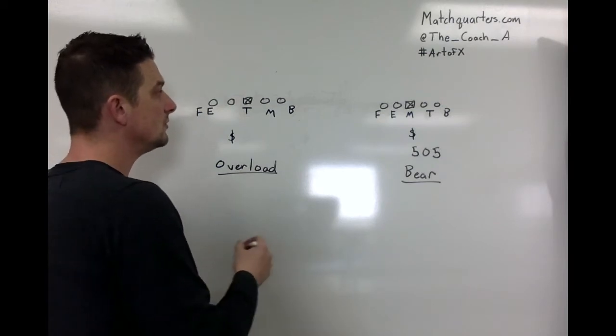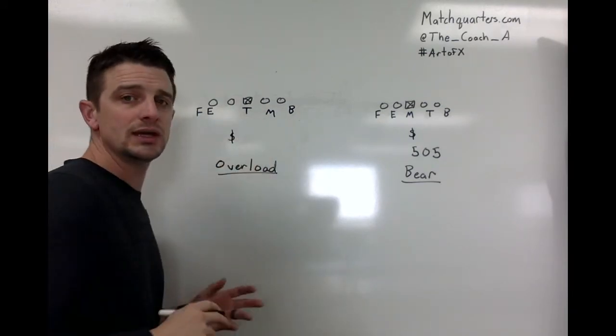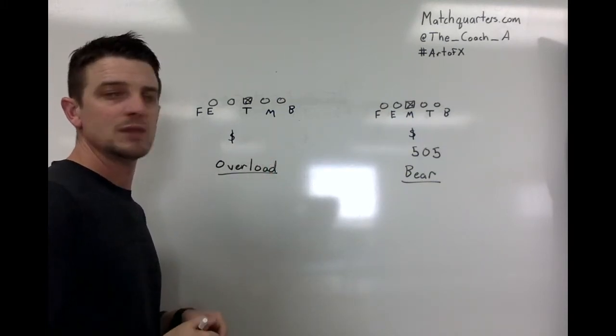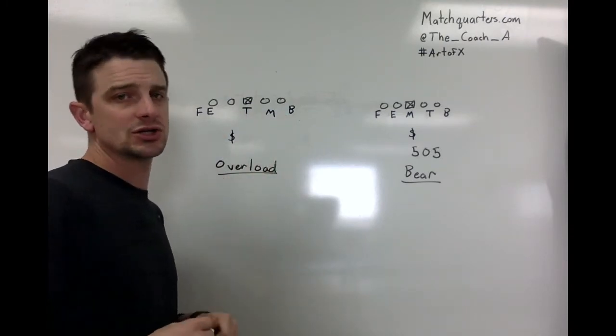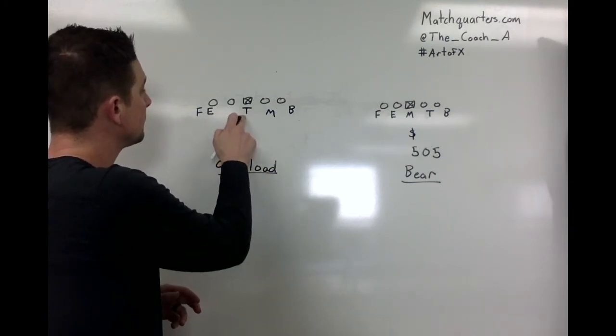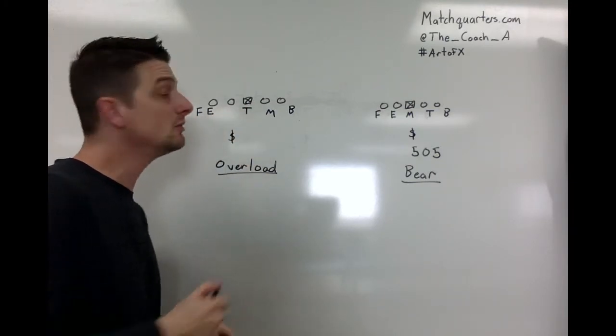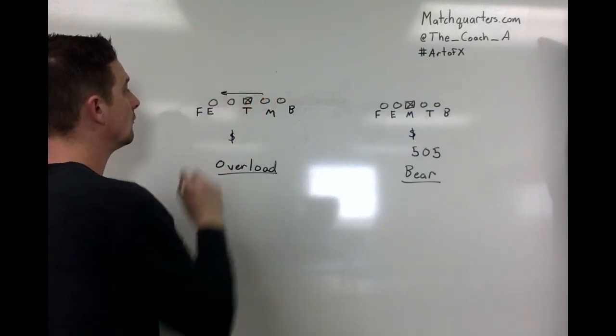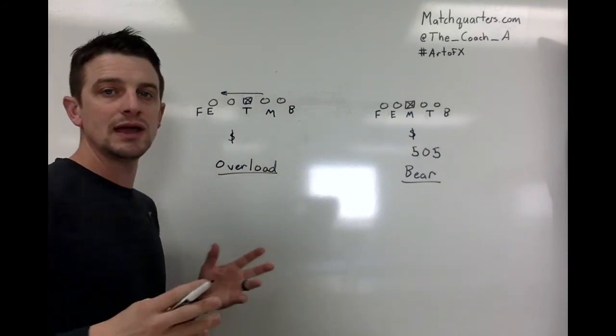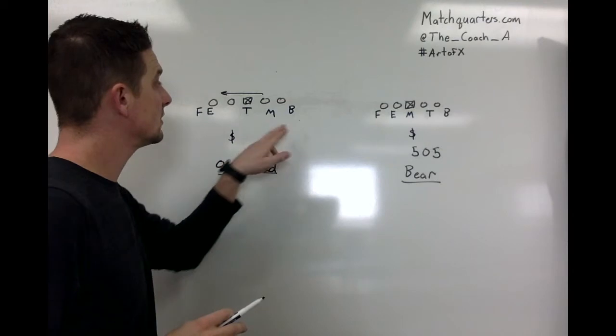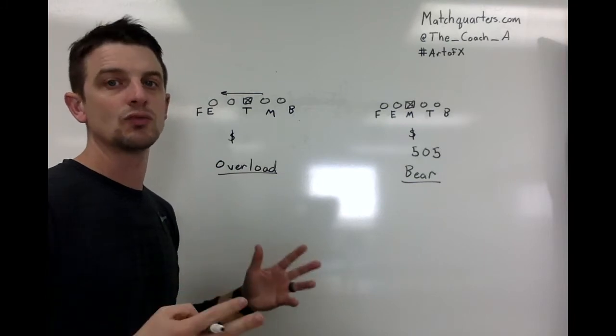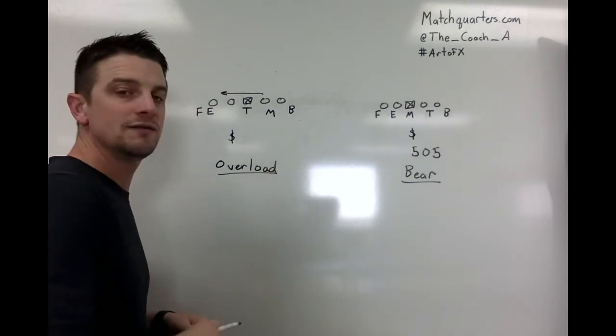Usually what you want to do is whichever tackle is the weakest one, you want to set the overload away from them. So let's say they've got a weak left tackle and we want our boundary edge rusher to be the guy that's getting the one-on-one. What the overload does is we've put three big guys on one side, so they're going to have to slide protection over that way. Your field and boundary edge rushers could be your best linebacker rusher, your jack four downs, or you have one DN that's really good at edge rushing.